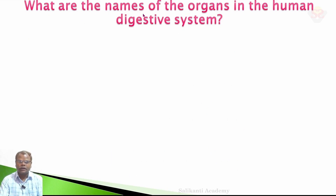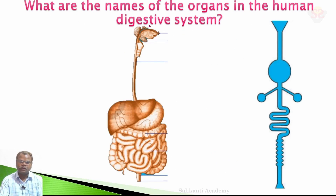What are the names of the organs in the human digestive system? In our textbook, improve your learning, there is a question. In that question, this picture is present. This picture is the symbol of the digestive system.